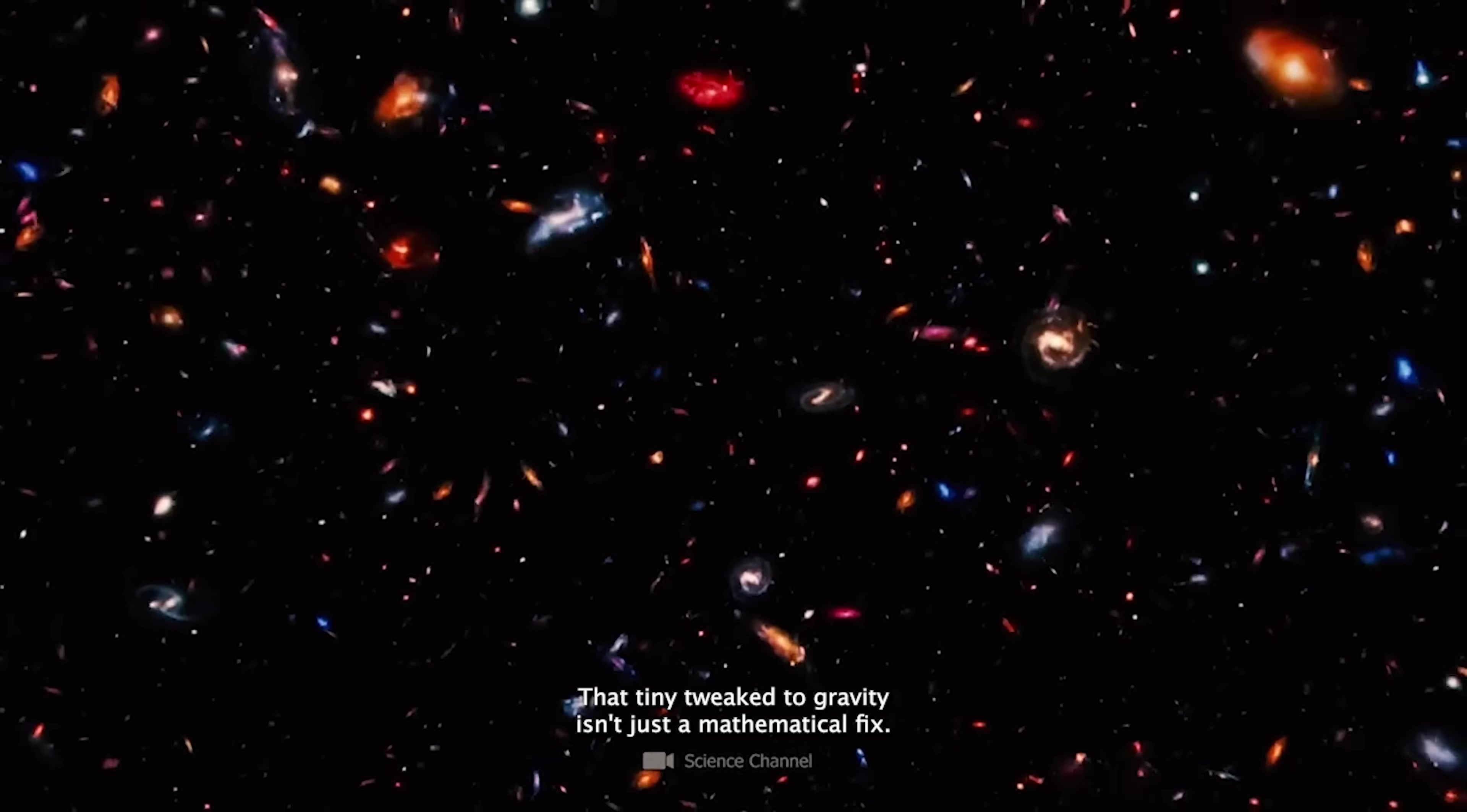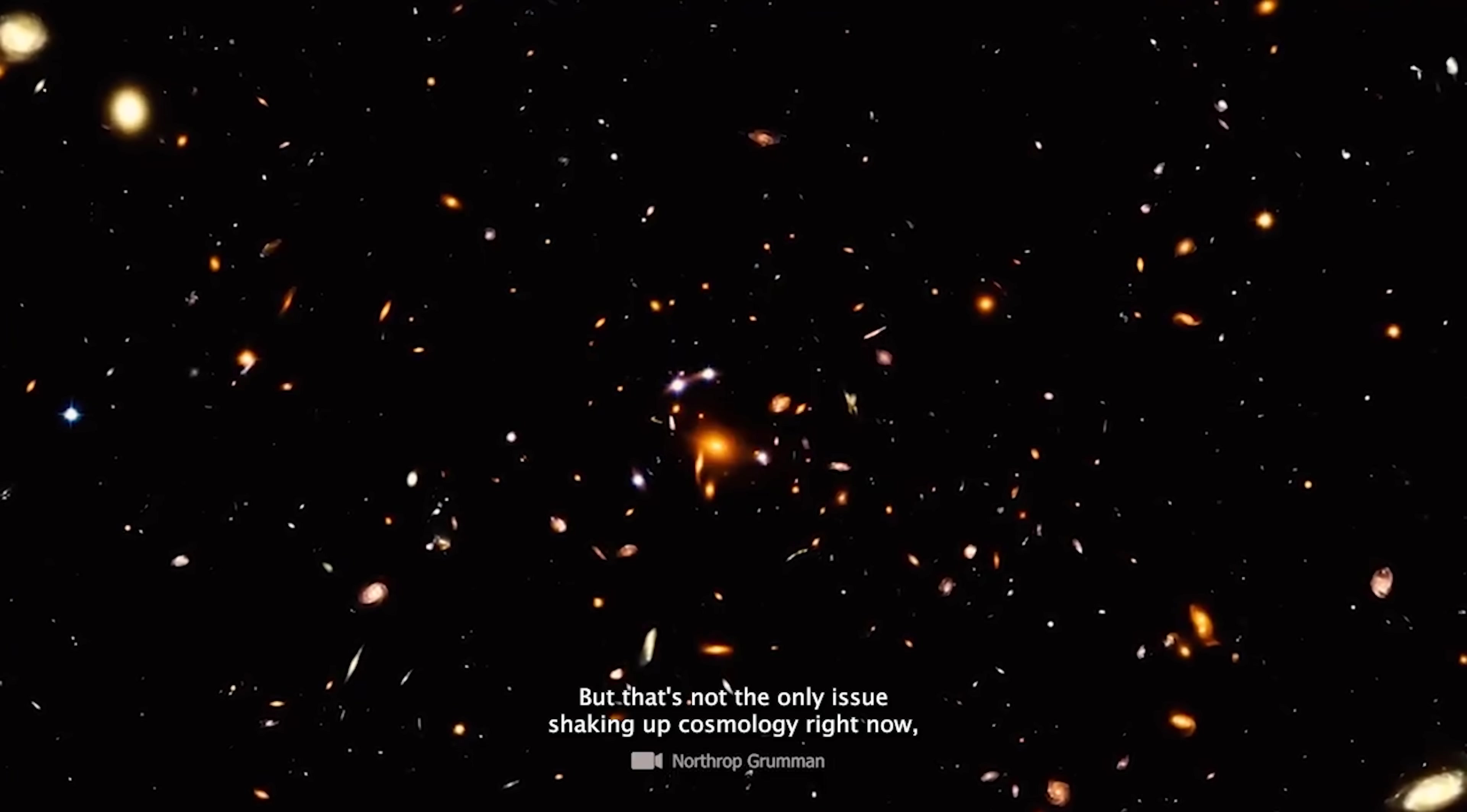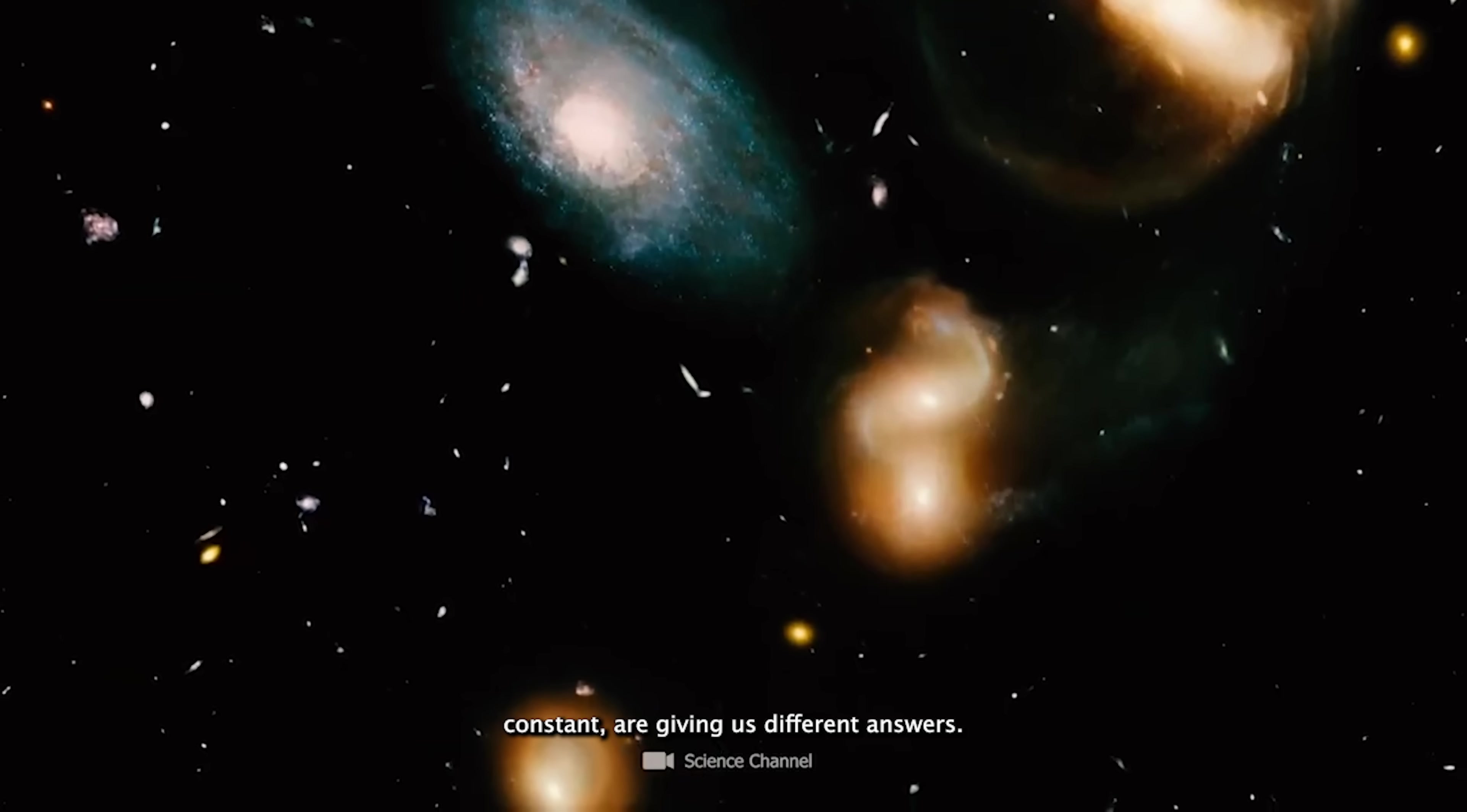That tiny tweak to gravity isn't just a mathematical fix. It could be a sign that Einstein's theory needs a major revision, at least when it comes to the early universe. But that's not the only issue shaking up cosmology right now. Thanks to the Webb Telescope, scientists are now facing an even bigger puzzle. The universe's expansion isn't happening uniformly. Different ways of measuring the expansion rate, what we call the Hubble constant, are giving us different answers.